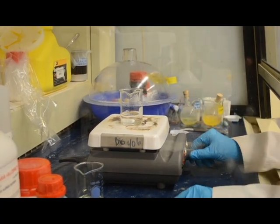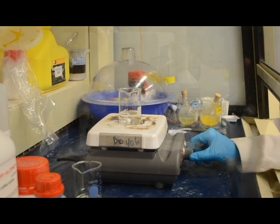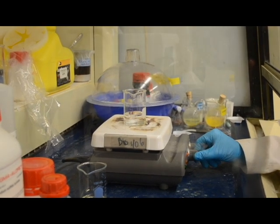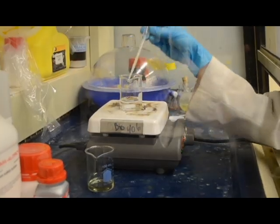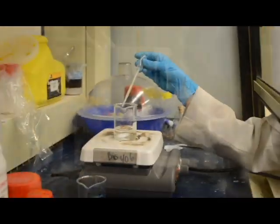The beaker of cadmium acetate is placed on a stirring plate with a stir bar. The plate is turned on to stir the solution vigorously. Ten drops of the sodium sulfide is then added slowly to the beaker.